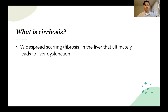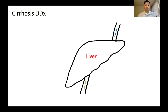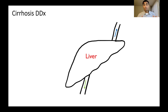So let's go into our approach for the differential. The differential diagnosis is a term we use for all the different possible causes. We'll go over a framework for this, and I think it's most helpful to think of it in three broad buckets: upstream causes from the hepatic vein, downstream causes from the biliary system, and then causes within the liver organ itself.